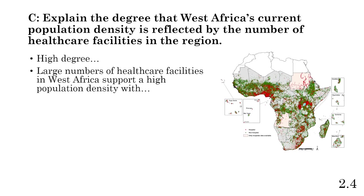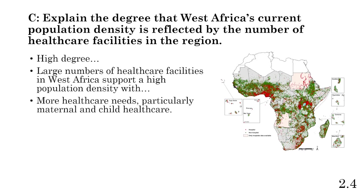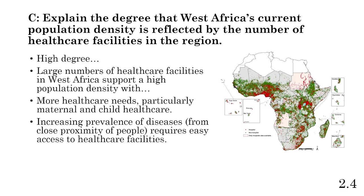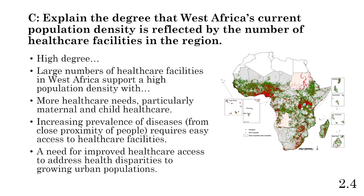We have to back this up and elaborate. These explain-the-degree prompts are your most extensive prompts, requiring in-depth written analysis. The large number of healthcare facilities in West Africa supports high population densities. High population density means more healthcare needs — particularly maternal and child healthcare — and an increased prevalence of diseases because people are so close together. There's also a need for improved healthcare access to address health disparities, as urban development doesn't produce a uniform healthcare pattern across different regions.